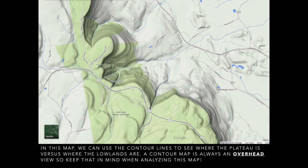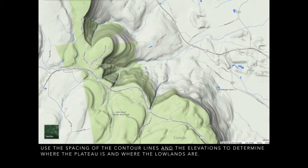And back to our contour map. We're going to be using the contour lines to see where the plateau is on this map versus where the lowlands are. And again, a reminder — the contour map is an overhead view, so keep that in mind when you're analyzing and interpreting this map. We'll be using the spacing of the contour lines and the elevations to determine where the plateau is and where the lowlands are.